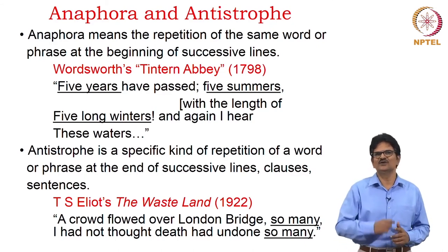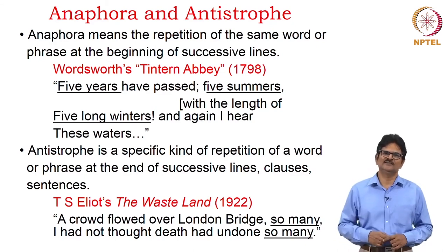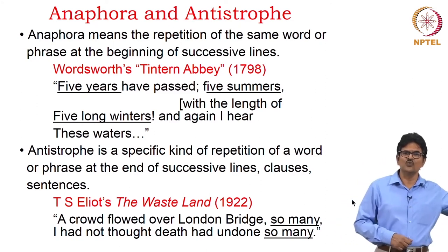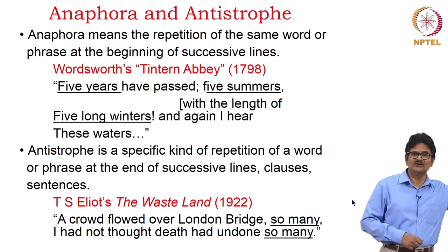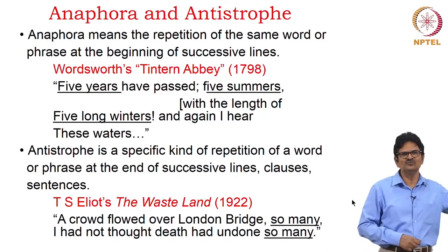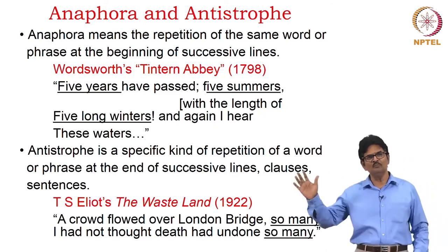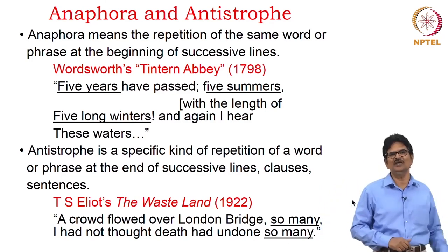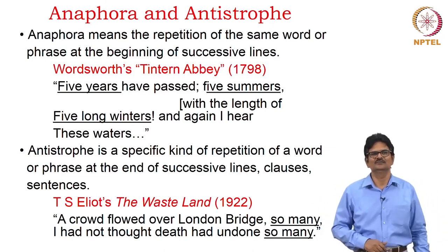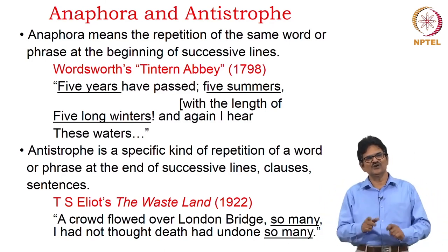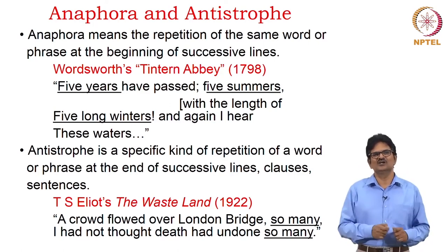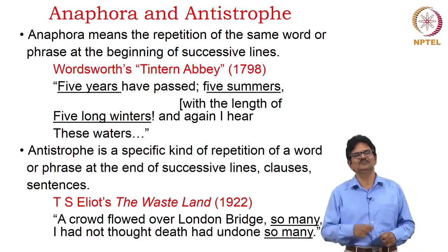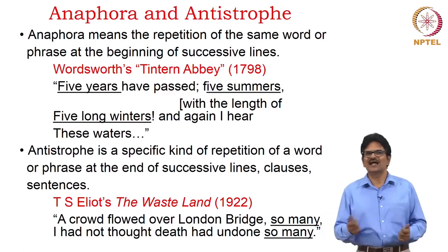We have a good example of antistrophe in T.S. Eliot's 'The Wasteland': 'A crowd flowed over London Bridge, so many. I had not thought death had undone so many.' Antistrophe and strophe — these two words are also used in the context of ode, which we will see in another context.